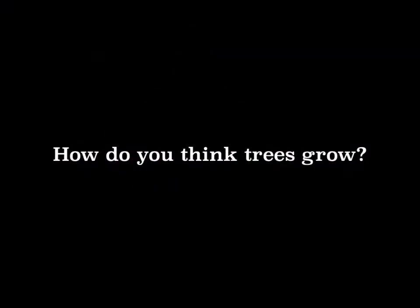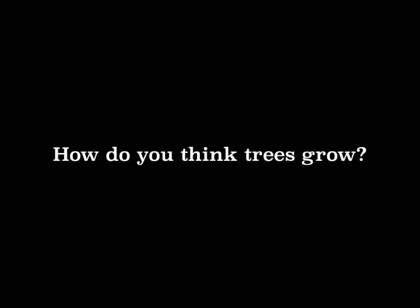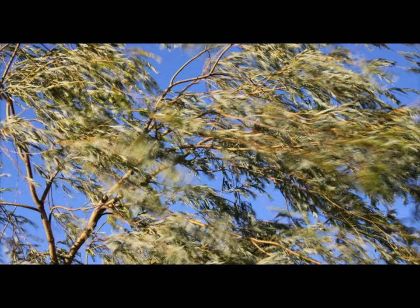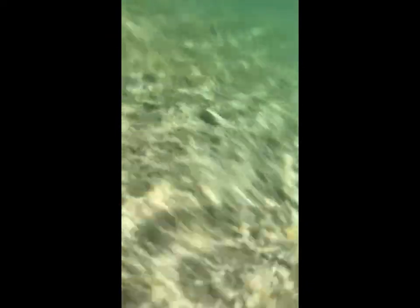Trees don't just magically appear, so how do you think trees grow? First, seeds from a tree must be dispersed. This can happen through wind, water, and even animals. The seed then goes through germination, which is when it soaks up water and splits open. When that happens, the root grows down into the soil and the stem grows up and out of the soil. As the tree absorbs carbon dioxide and sunlight, the branches and roots thicken and get taller.